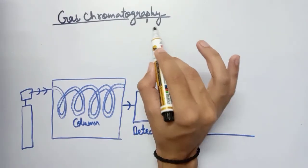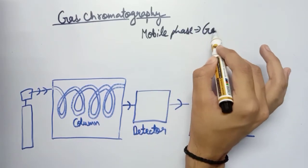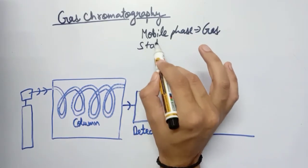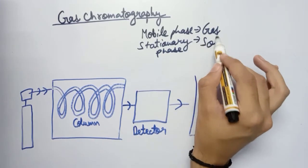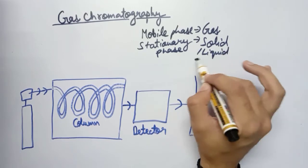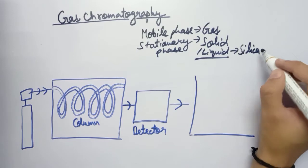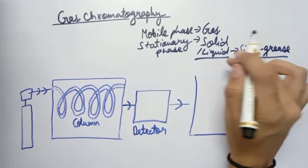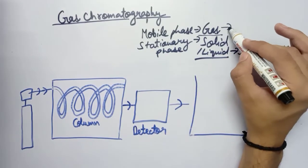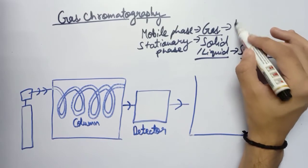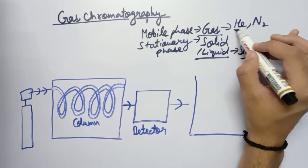In gas chromatography, the mobile phase is gas, and the stationary phase, which sticks to the column, is in solid or liquid state — mostly liquid. For example, silica grease is used as a liquid stationary phase. The mobile phase gas is an inert noble gas that doesn't react with the sample — mostly helium or nitrogen, though hydrogen is also used in some cases.